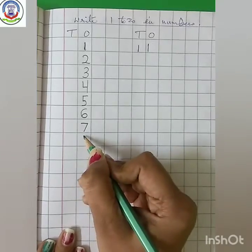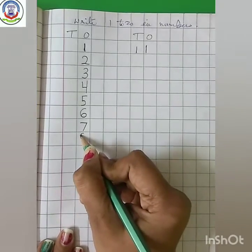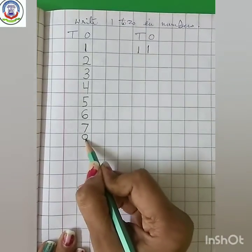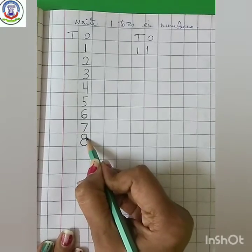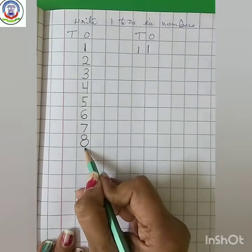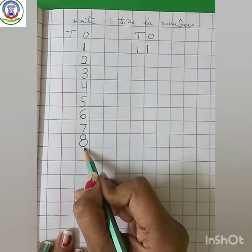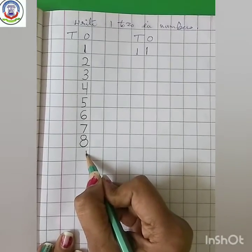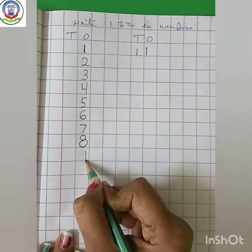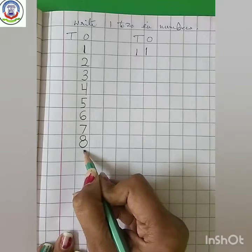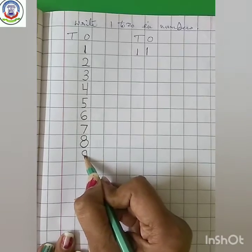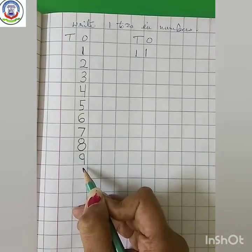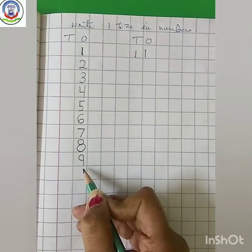Next number, make a circle, then another circle. 8. Now, standing line, make a curve. Like this. 9.